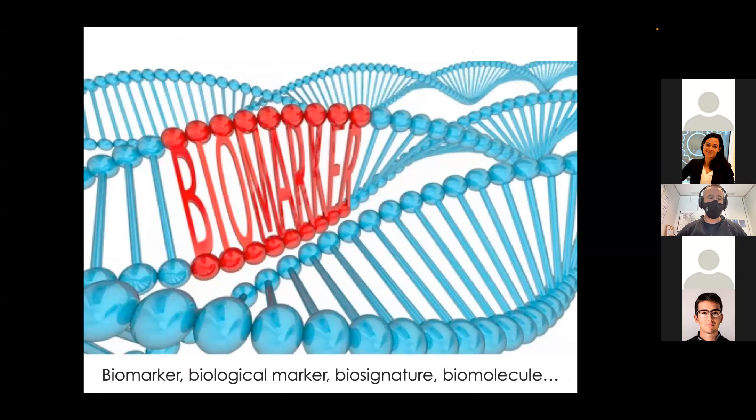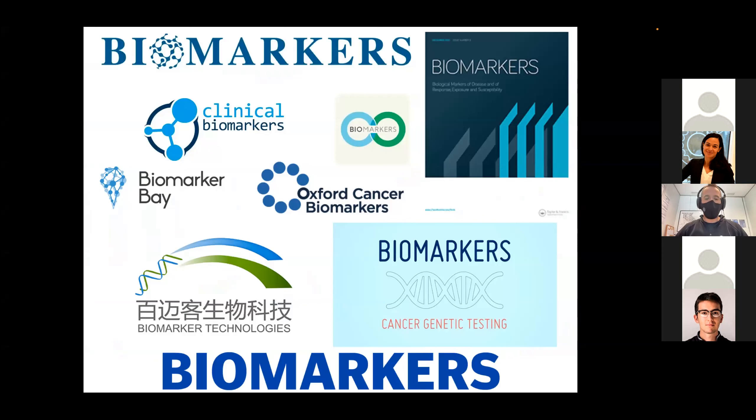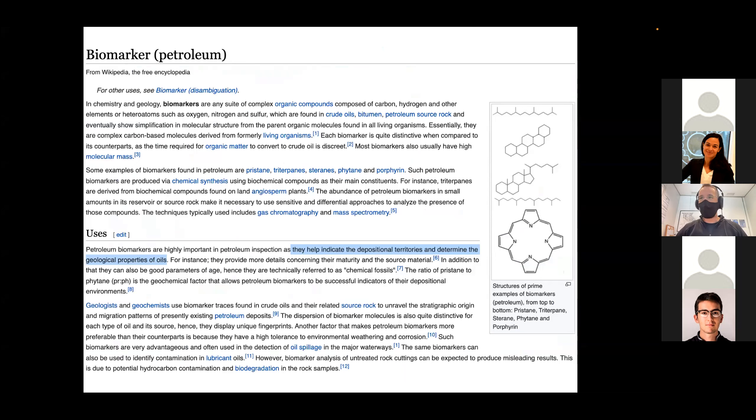Biomarkers - synonyms include biological marker, biosignature, biomolecule. But let's see which biomarkers I am not going to talk about. I am not going to talk about biomarkers in biomedical research, cell biomarkers, genomic, transcriptomic, proteomic, metabolic, molecular, cellular, imaging biomarkers, embryonic biomarkers, cancer biomarkers. And there's even a journal with the name biomarker. This is very funny. Petroleum biomarkers are highly important in petroleum inspection as they help indicate the position of territories and determine geological properties of oils.